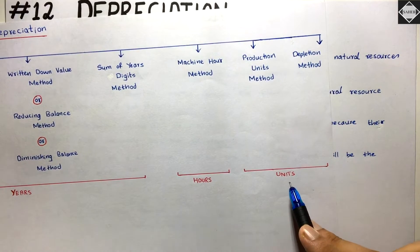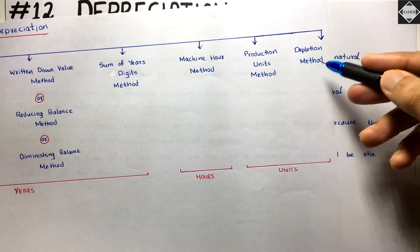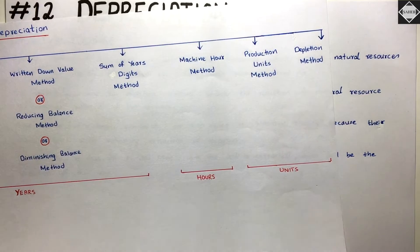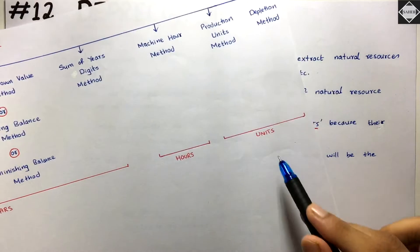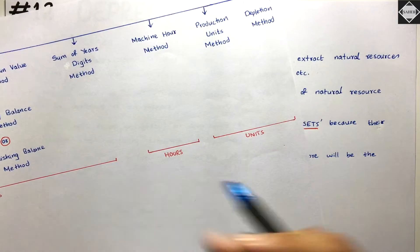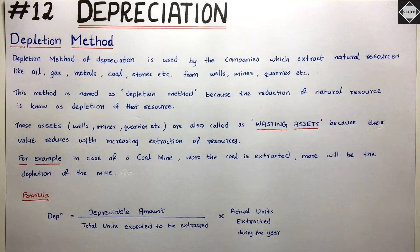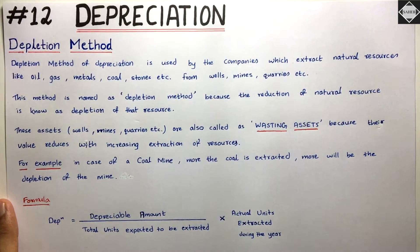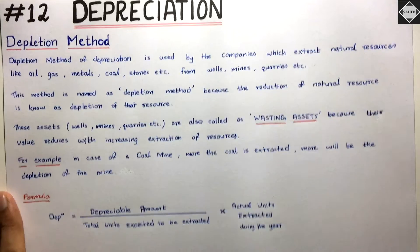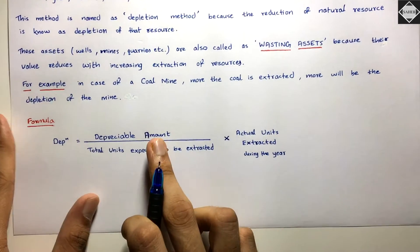In the production units method, useful life was also in units, but there we said how many units we can produce. In the depletion method, we are not producing anything — we just extract the oil or coal. So depreciation equals depreciable amount, which is cost minus scrap value, divided by total units expected to be extracted.